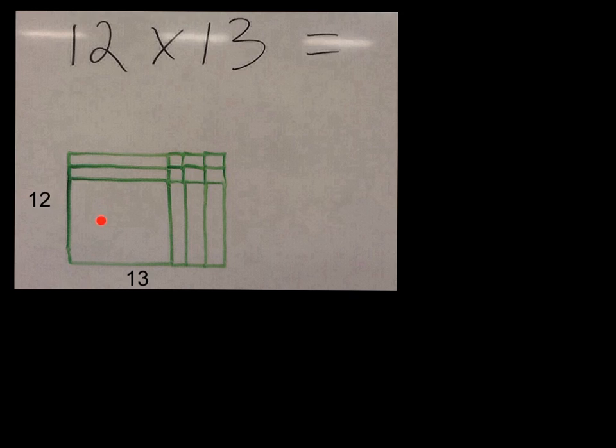And yes, we still have our 10 by 10 block, the 100. We have two groups of 10s to make the 12, and we have the three groups of 10s to make the 13, with the ones filled in. But let's flip it on its side and see what that looks like.